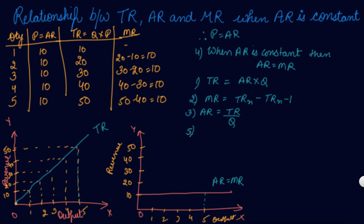MR is simply an addition to TR when one more unit of output is sold. In this example, 10 is the addition each time — so 10 is the MR at every unit of output.